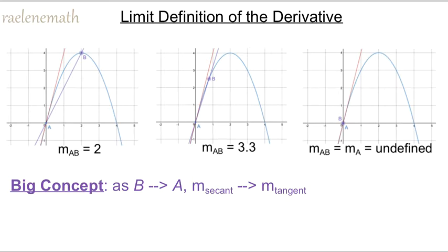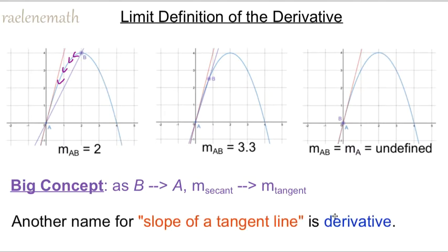Hi there and welcome to Raylene Math. We're going to look at the limit definition of the derivative. This video follows directly from the video where we did the limit definition of the tangent slope. We have a secant line here which goes through two points A and B. As point B moves towards point A along the curve and gets closer and closer, the purple secant line turns into the red tangent line. So our big concept is: as point B moves towards point A, the secant slope turns into or becomes closer to the tangent slope.